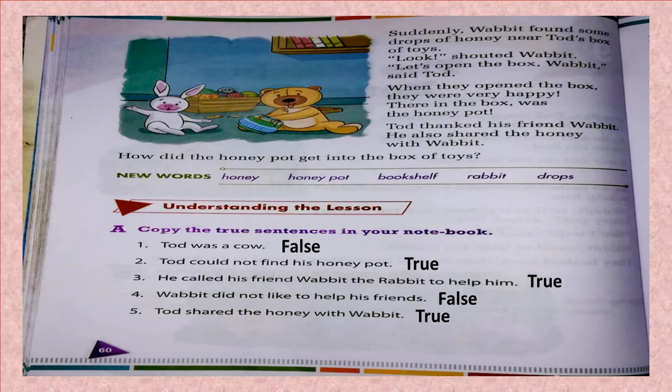Number one: Todd was a cow. Was Todd a cow? Todd was a bear, so the first sentence is false. Number two: Todd could not find his honey pot. This is true — he looked everywhere and he could not find his honey pot.